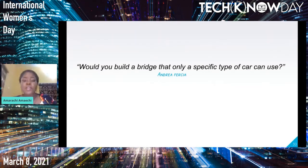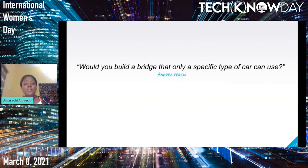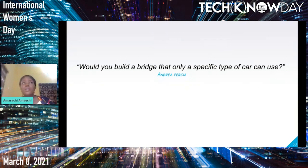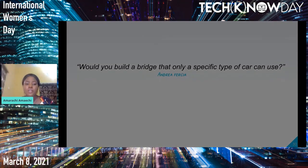We've come to the end of the session. I'll end with a question for you to reflect on: Would you build a bridge that only a specific type of car can use? In relation to accessibility — would you build a product or application that only a specific type of person can use? If the answer is no, then you should consider building with accessibility in mind from here on. Thank you.